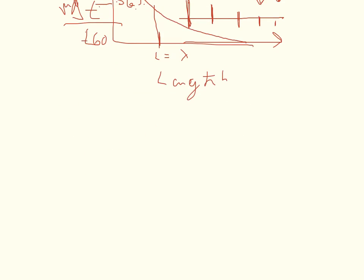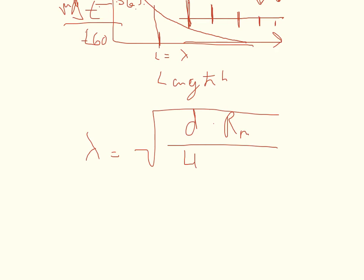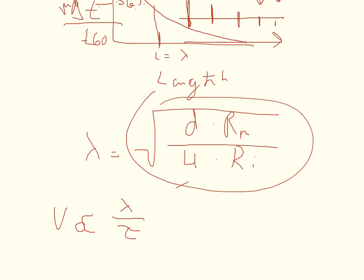The length constant has a specific equation: lambda = sqrt( d × Rm / (4 × Ri) ), where d is diameter, Rm is resistivity of the membrane, and Ri is resistivity of the intracellular fluid. The conduction velocity is directly proportional to lambda and inversely proportional to tau. We can plug both equations in and do some algebra.